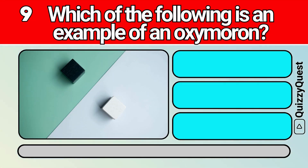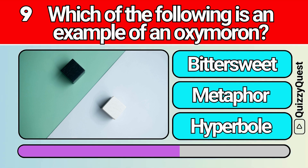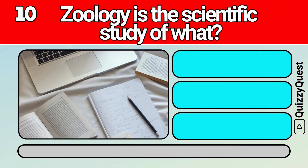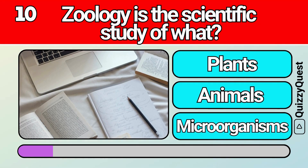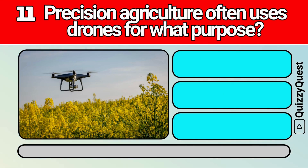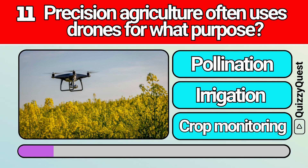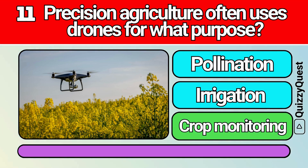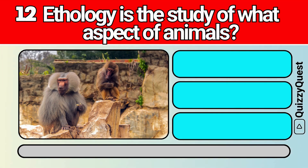Which of the following is an example of an oxymoron? Zoology is the scientific study of what? Precision agriculture often uses drones for what purpose? Mythology is the study of what aspect of animals?